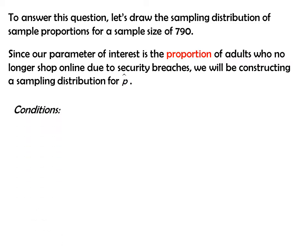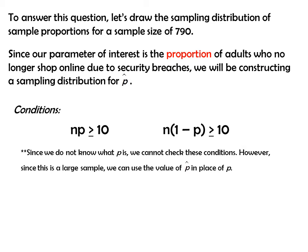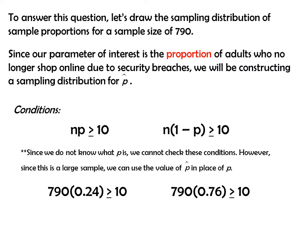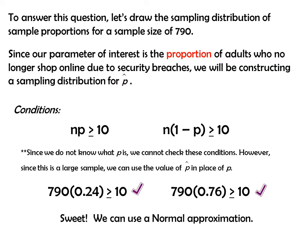We check our conditions. The first one is whether or not we can use a normal approximation. Since we don't know what p is, we can't check these conditions directly. However, since this is a large sample, we can use the value of p-hat in place of p. So 790 is our sample size, and we believe the population parameter to be 0.24. Both conditions are satisfied, so we can use a normal approximation.